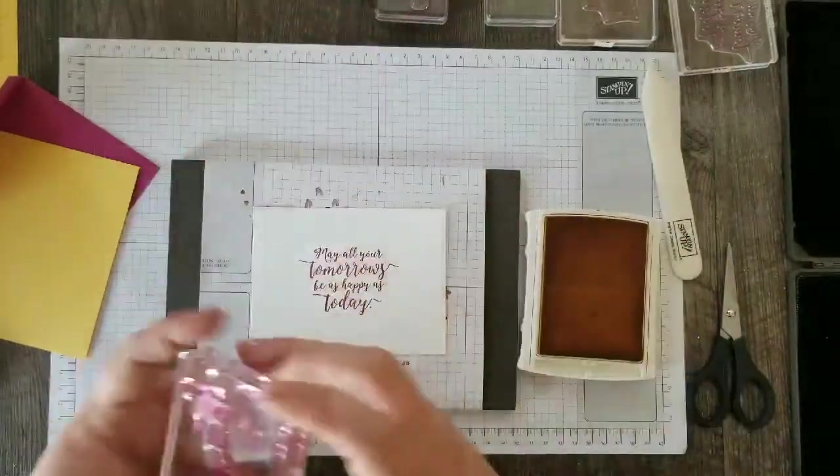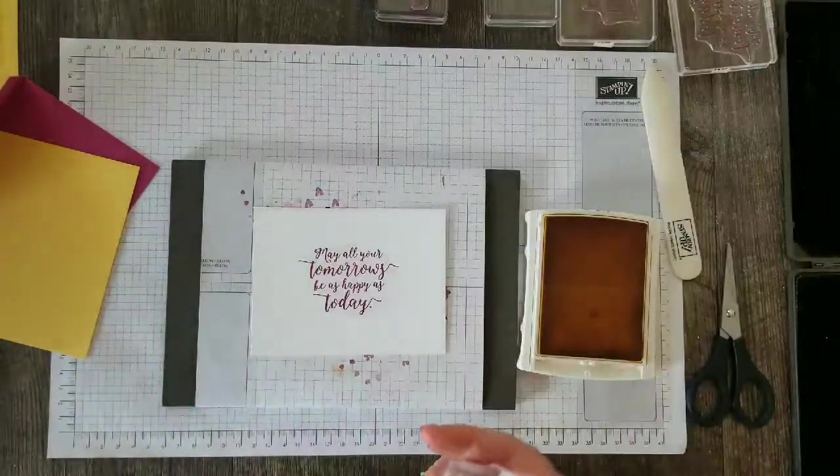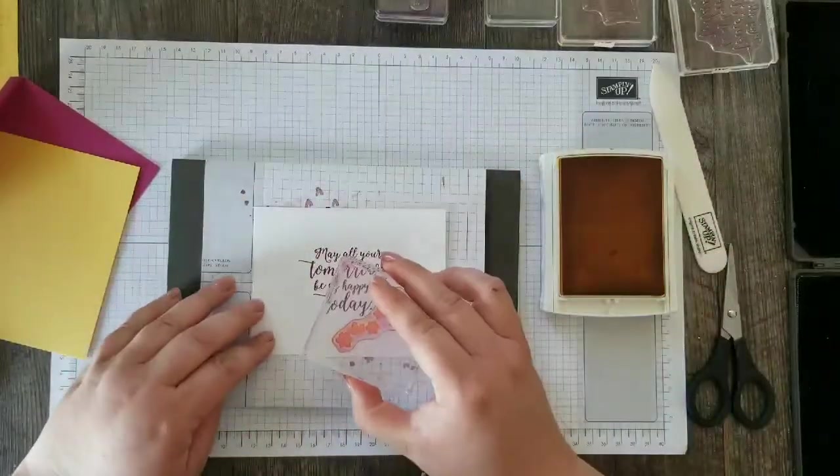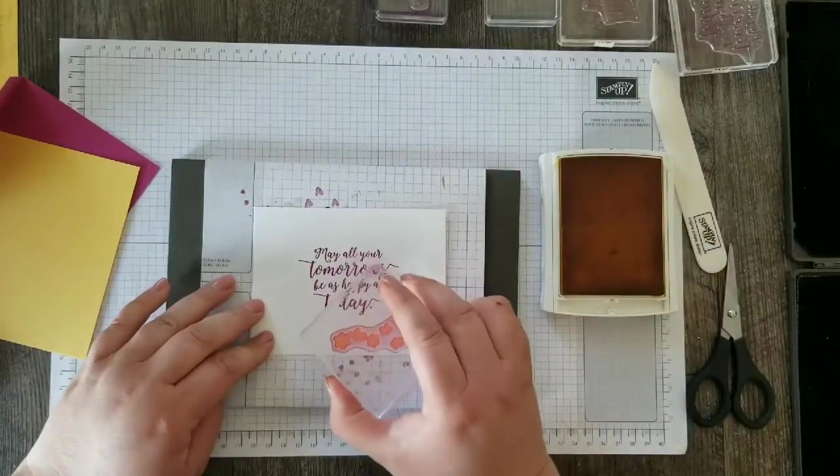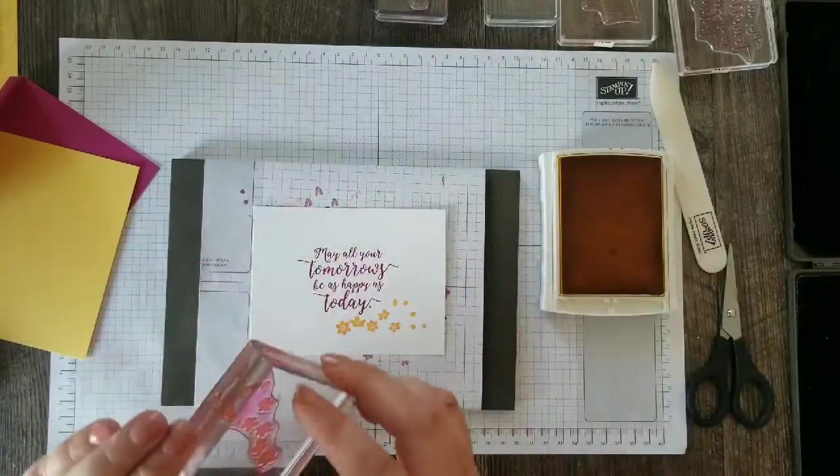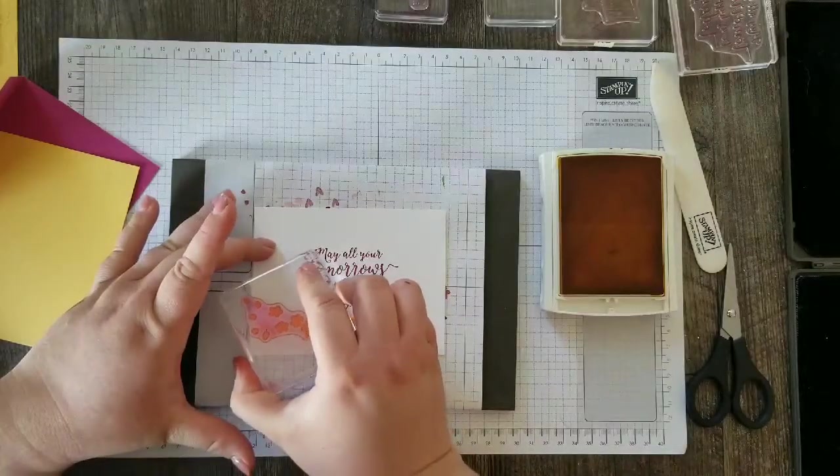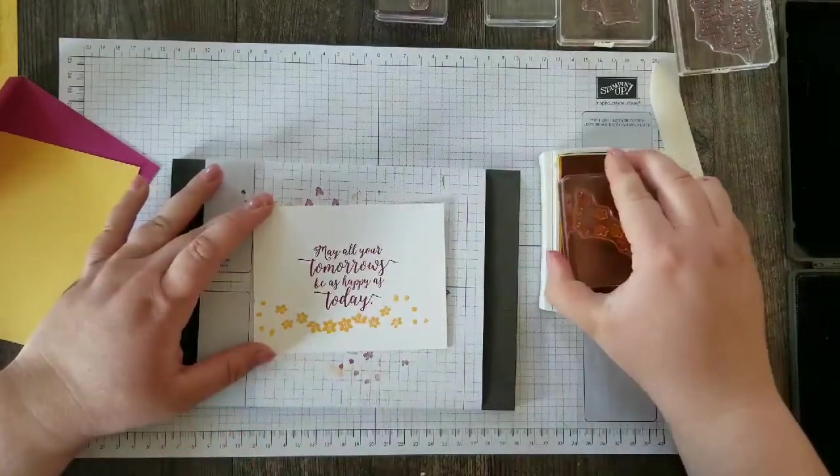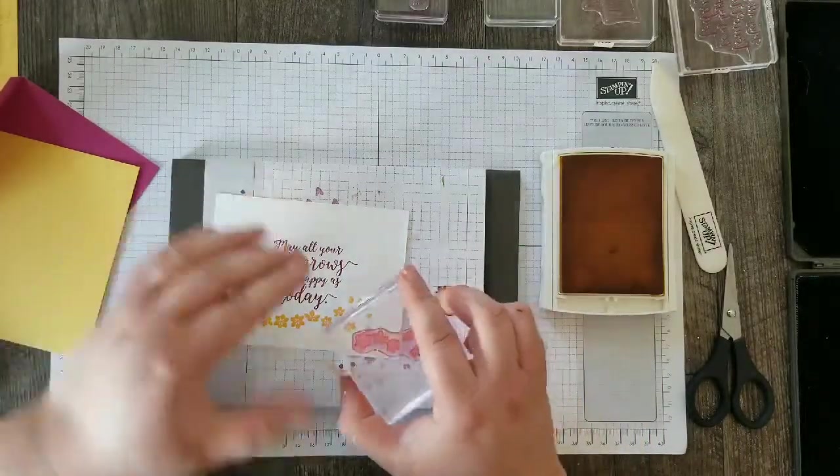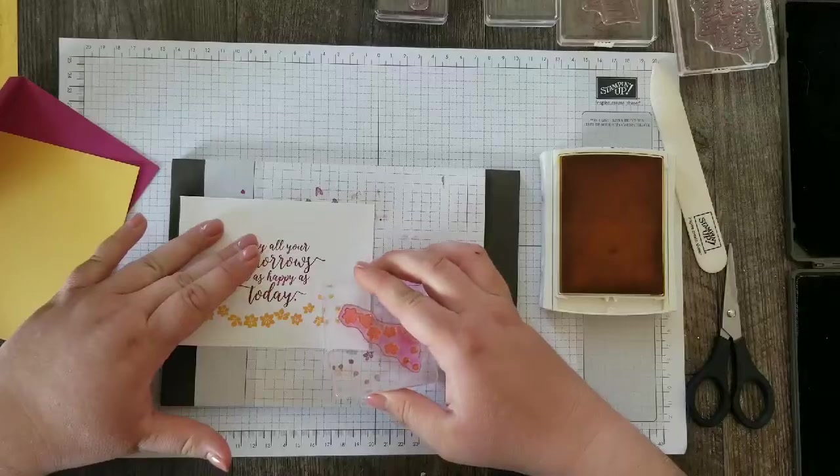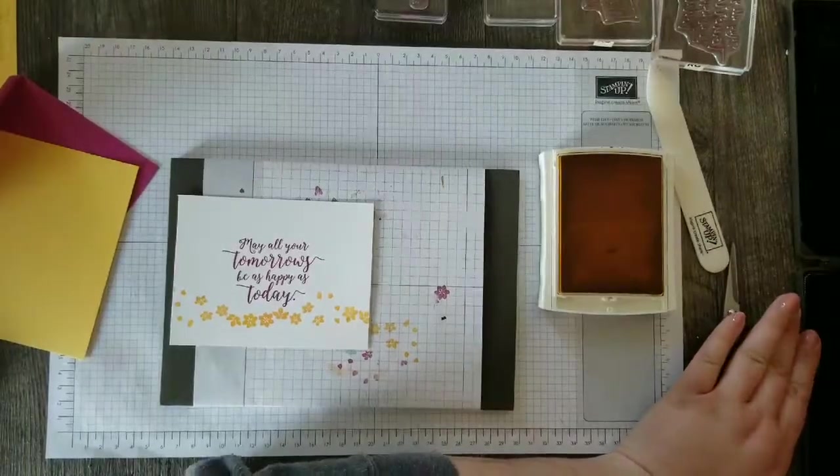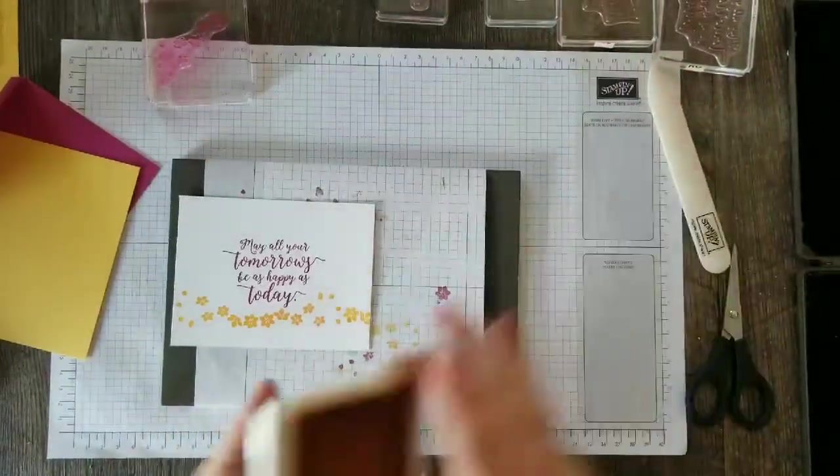I want that to tie in with my Daffodil Delight layer. So I'm going to use these little tiny flowers right here from the stamp set and I'm just going to stamp those along the bottom of our saying here across the card. And we're going to use those flowers again so I'm just cleaning them off on my stamp and scrub.